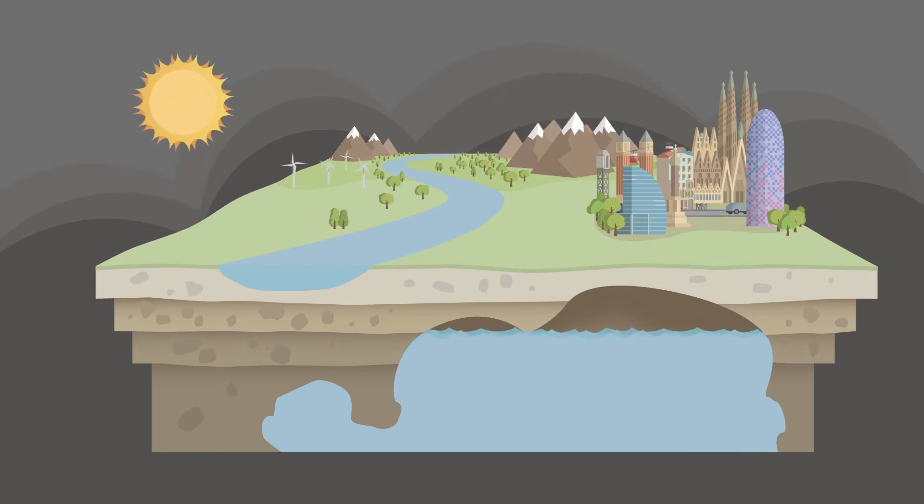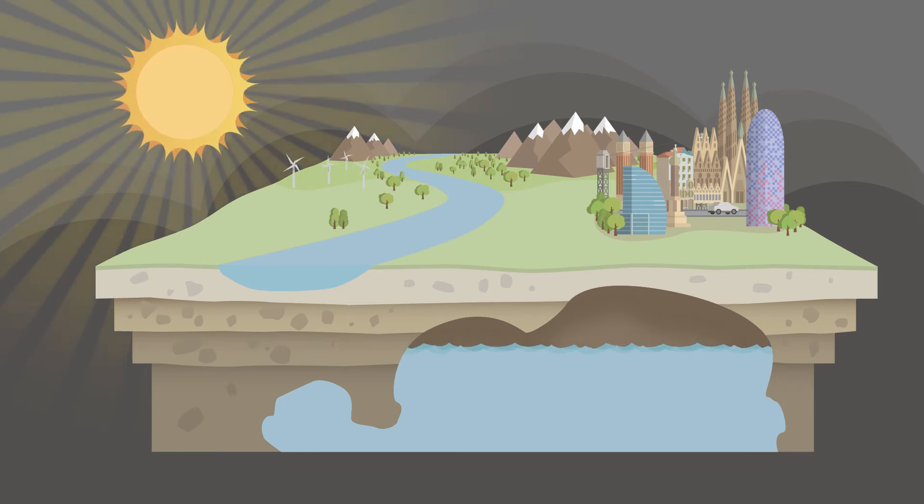In periods of prolonged drought, we could face a situation of water scarcity, in which the demand of the population exceeds the amount of available water. So how can we deal with this situation?